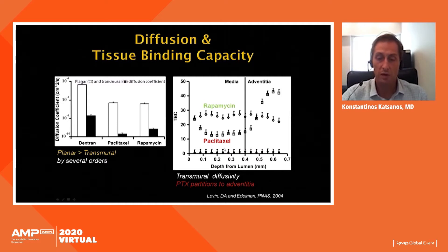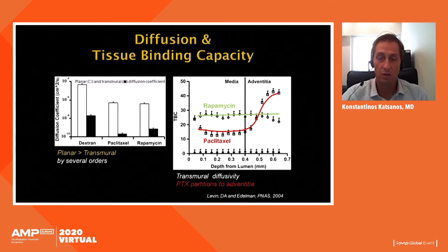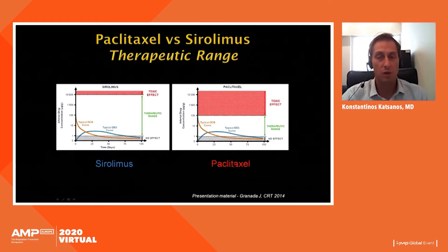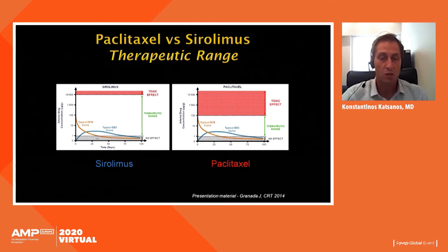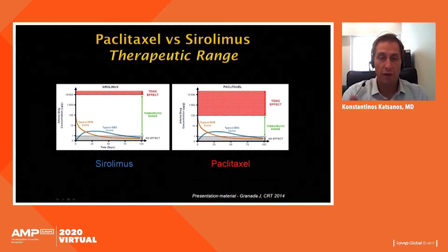Paclitaxel partitions much more easily to the outer vessel wall, the adventitia, whereas sirolimus distributes evenly across all different vessel layers. The therapeutic index is very wide for sirolimus and very narrow for paclitaxel. Sirolimus is safe up to more than 10 milligrams per gram of tissue concentration, but no more than 100 for paclitaxel, so the safe and efficacious range differs between the two medications.